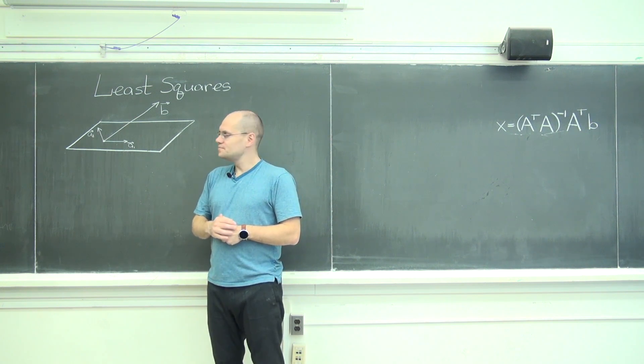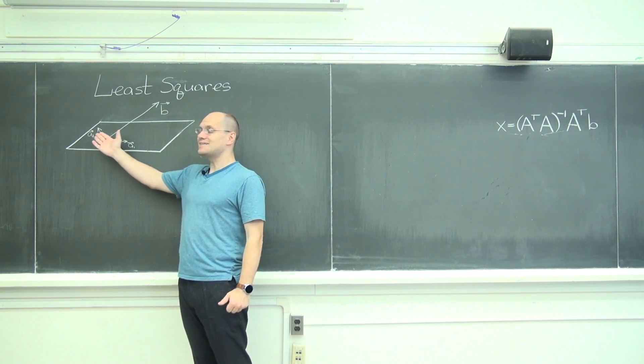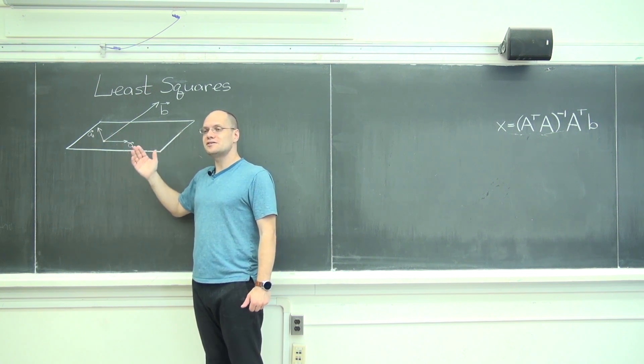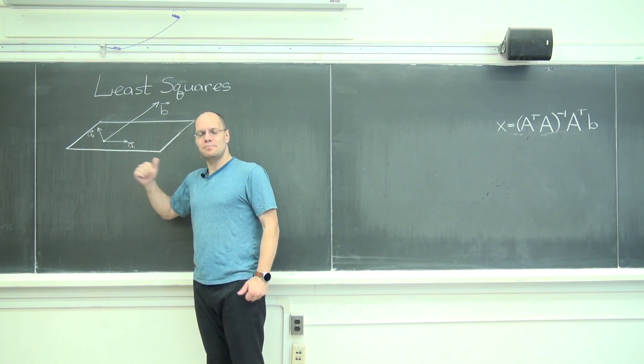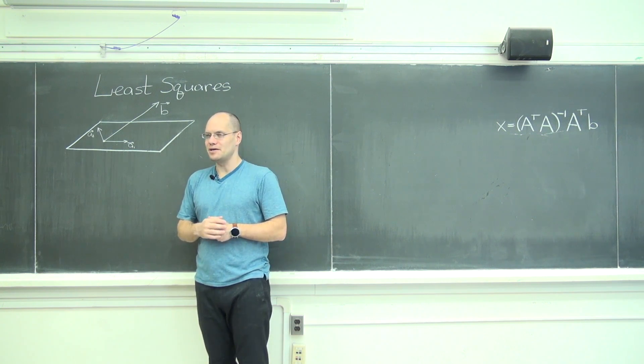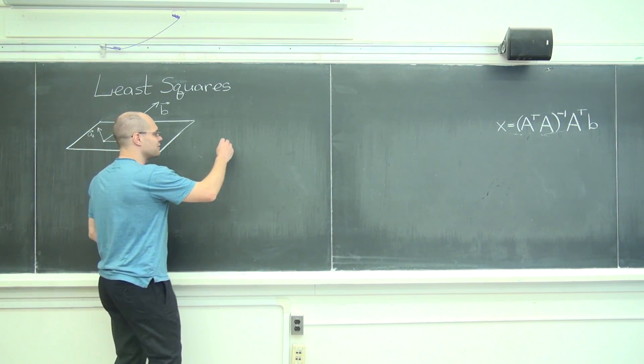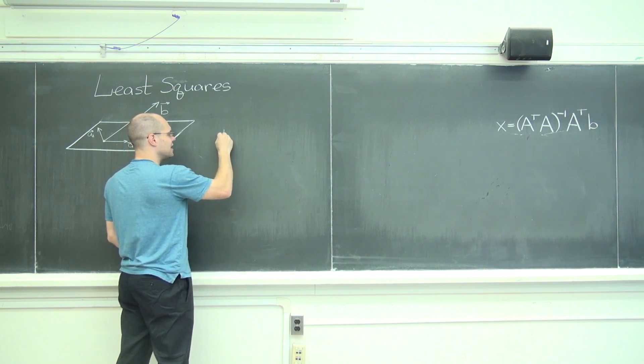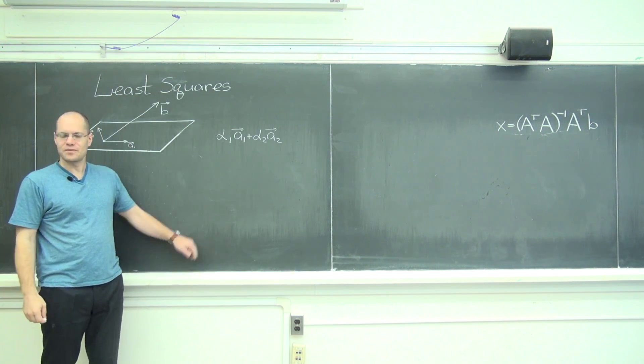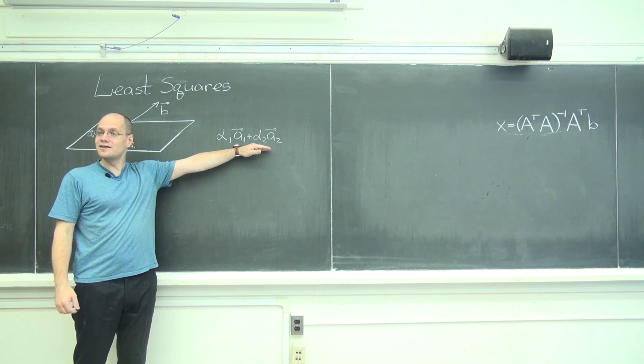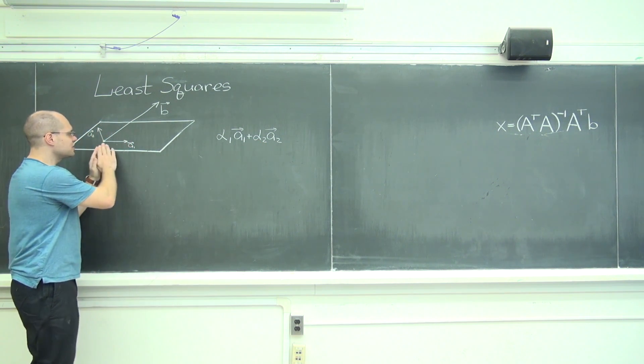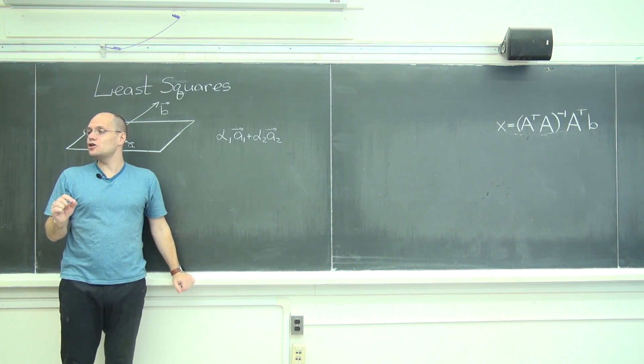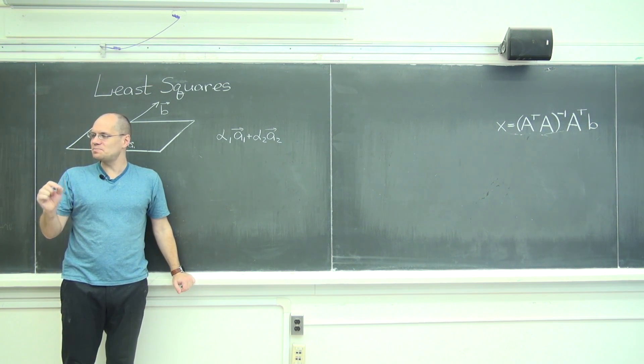And what we're trying to do, because we can't represent it as a linear combination of A1 and A2, is to find the closest thing to B which can be represented as a linear combination of A1 and A2. Let me write down what we're looking for. We're looking for this linear combination. In other words, we're looking for a vector in this plane that's as close to B as possible.